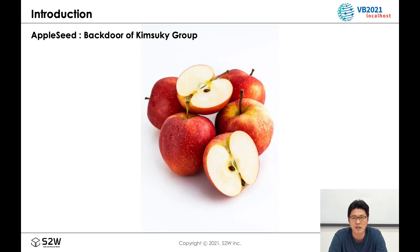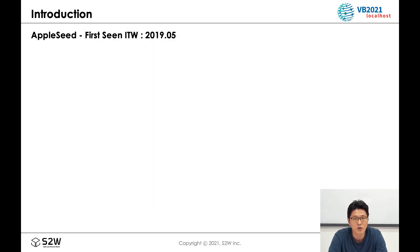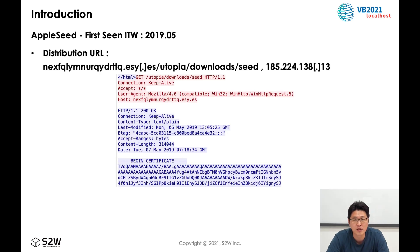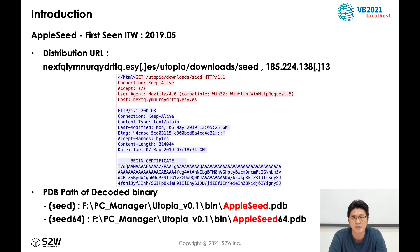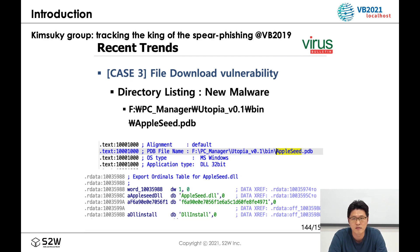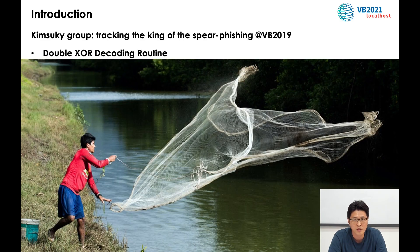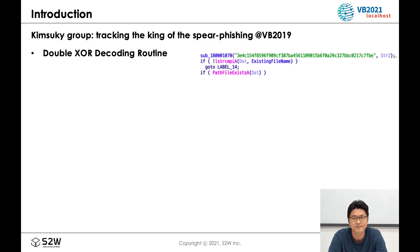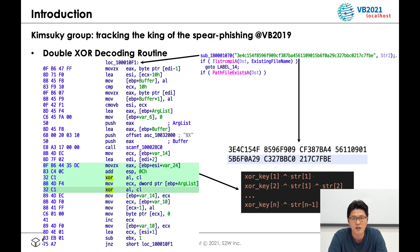Now, start talking about AppleSeed. This is the backdoor of the Kimsuky group, first observed in May 2019. At that time, each distribution URL and IP is as shown in the slide, and here are the PDB paths of AppleSeed. One of the big features of AppleSeed is the double XOR decoding routine. It needs various strings for the execution of malicious calls, including encoded API function names. This decoding method has been used continuously from the initial version and was also included in the malware discovered in Operation Newton.